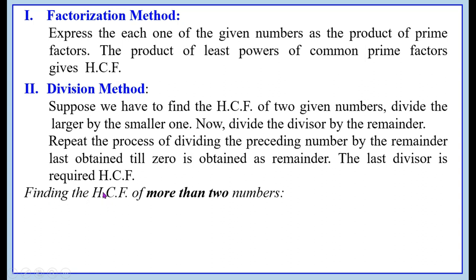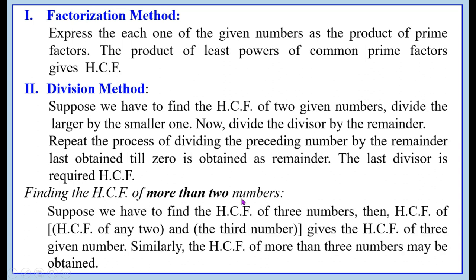Finding the highest common factor of more than 2 numbers: suppose we have to find the HCF of 3 numbers. First, we find the highest common factor of the first two. Then, with this result, we find the highest common factor of the third one. That gives the HCF of the 3 given numbers. Similarly, the HCF of more than 3 numbers may be obtained.